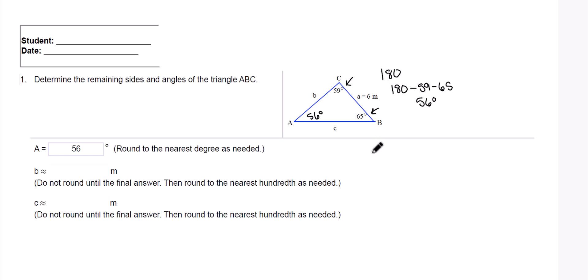I want to find side B first. We're going to have the sine of A over side A equals the sine of B. Now the big B is the angle over side B. Now let's fill in what we know. We have the sine of 56 degrees over side A, which is 6, equals the sine of angle B, which is 65 degrees over side B. Now we don't know that one.